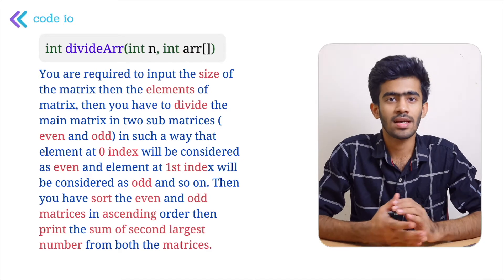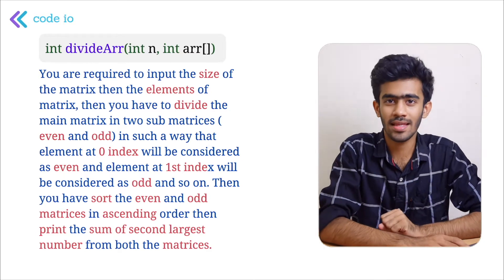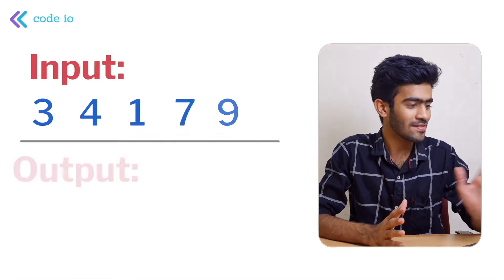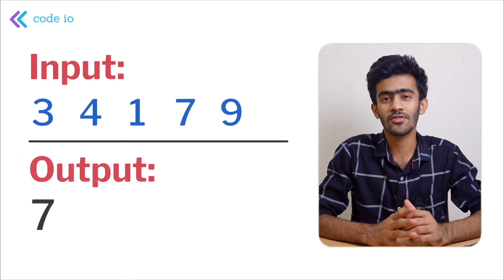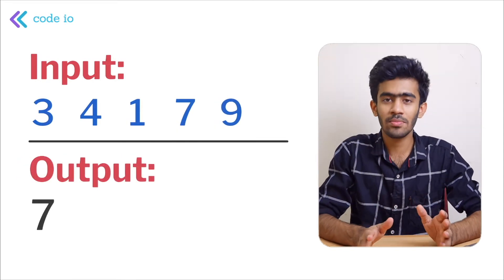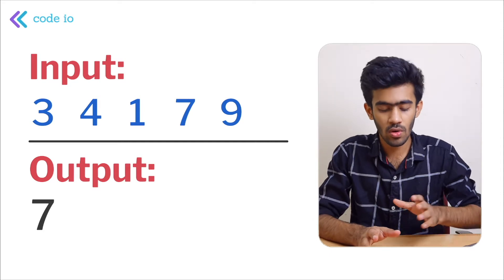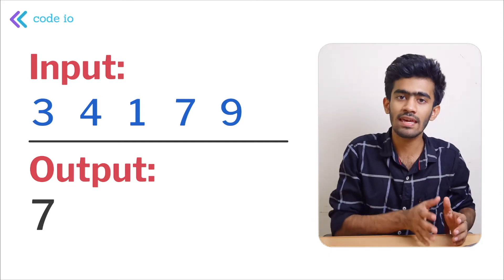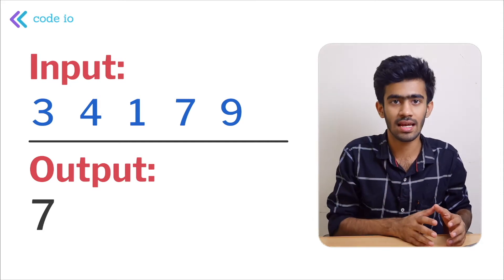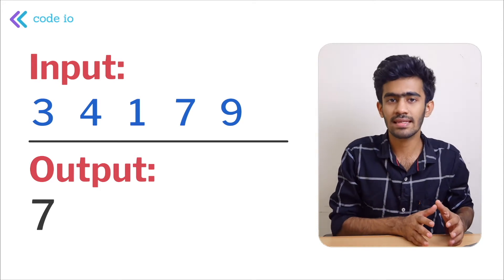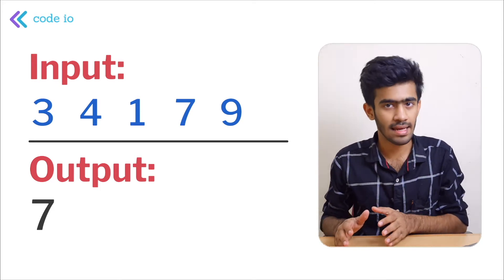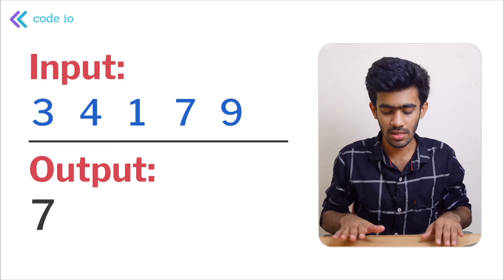It's simple. We have to give it an array, divide it so one is even index elements and the other is odd index elements.